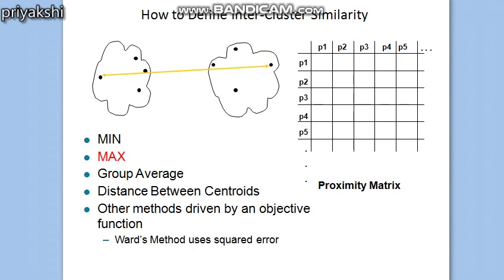In the case of max, the proximity is taken between the two farthest points in different clusters as the cluster proximity. Max is also known as the complete link hierarchical clustering algorithm. Complete link defines the proximity measure to be the distance between the two farthest points in different clusters, or in graphical terms, the longest edge between two nodes in different subsets of nodes.